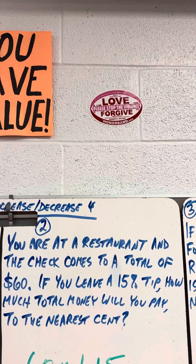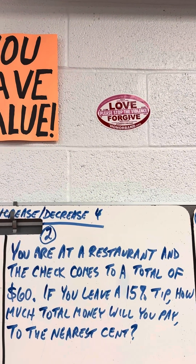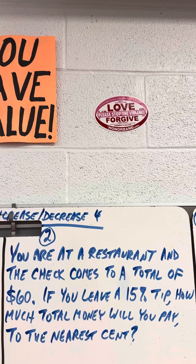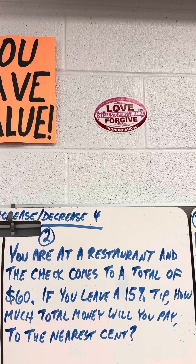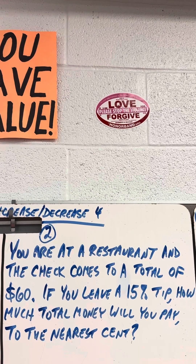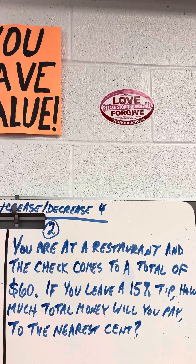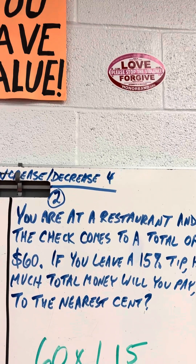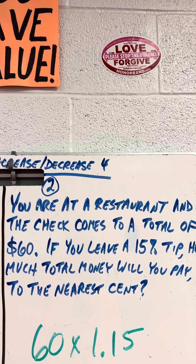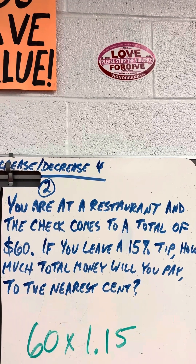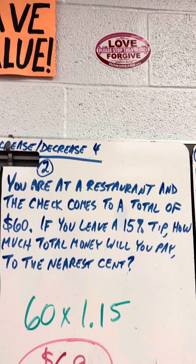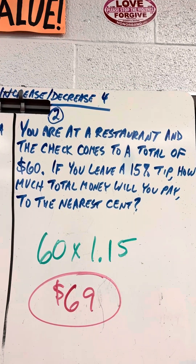You're at a restaurant and the check comes to a total of $60. You leave a 15% tip. How much total money will you pay to the nearest cent? 60 times 1.15, right? Or $69.